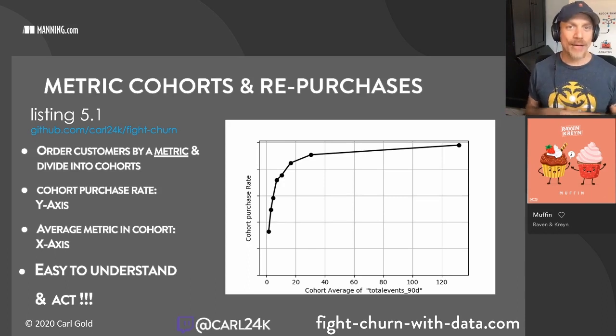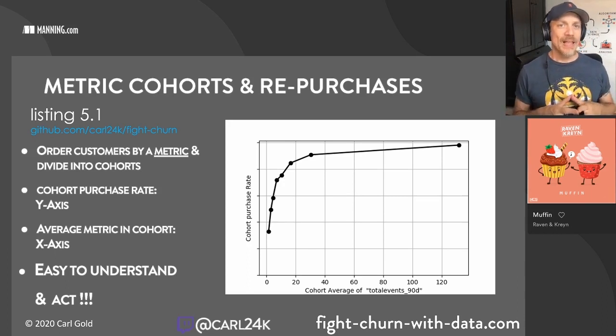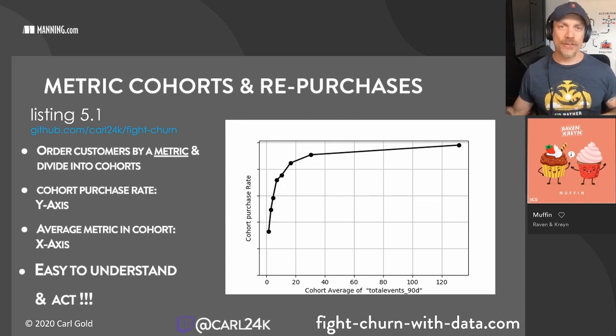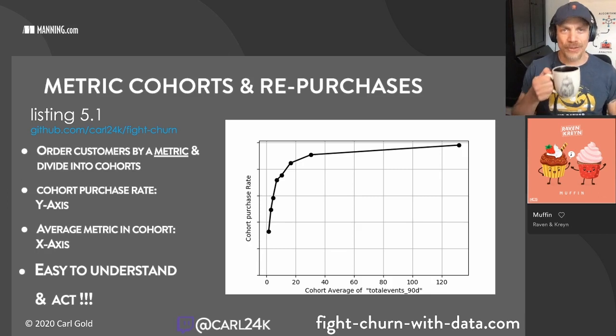The real numbers are missing to protect the confidentiality of the eBook website — they're letting me use their data on this stream but don't want to reveal everything about their business. The data is scaled so zero is at the bottom of the plot, meaning you can judge relative purchase rates. The lowest to highest cohort shows more than twice the rate of purchases in the top cohorts.